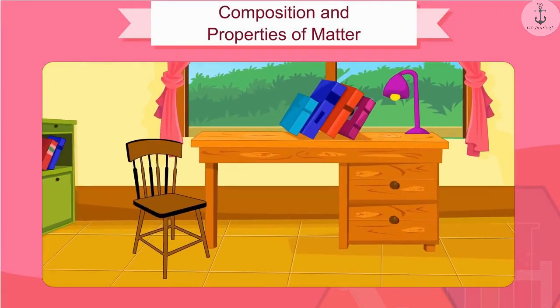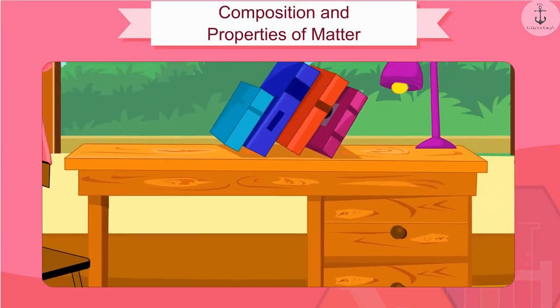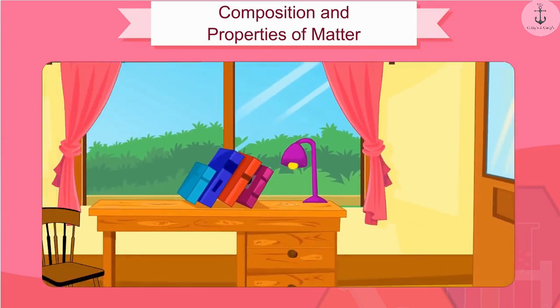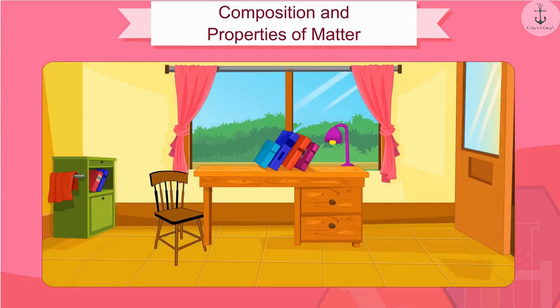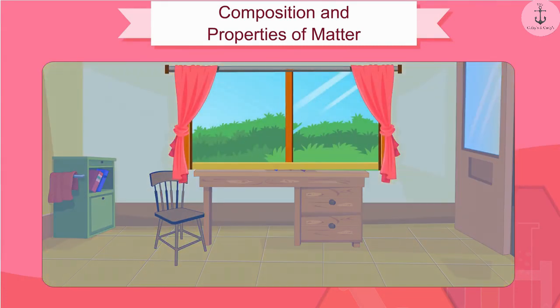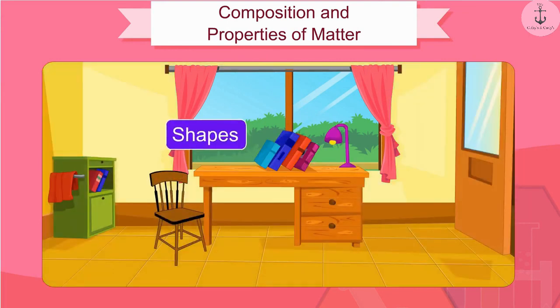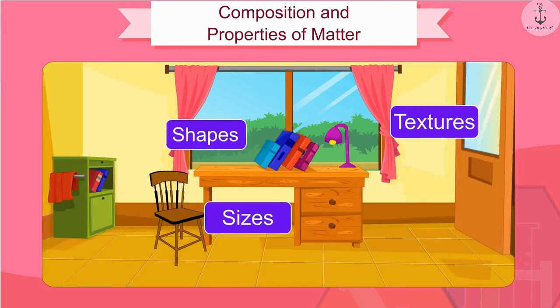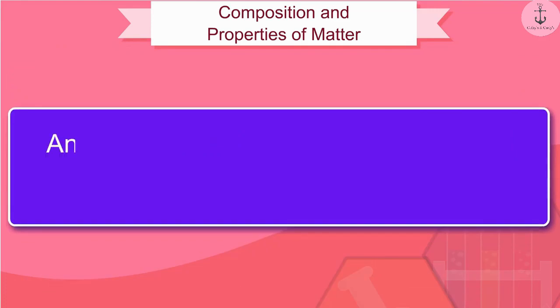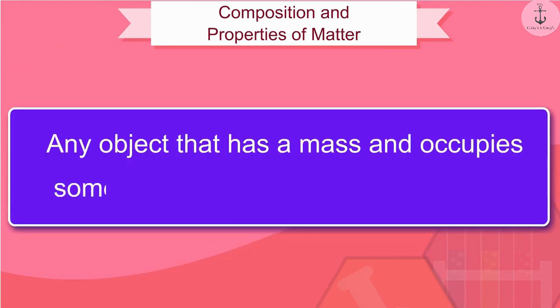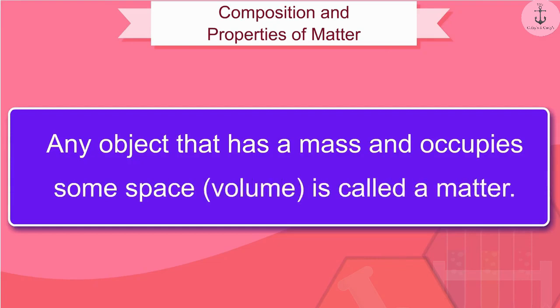As we look at our surroundings, what do you see? Yes, we see a large variety of things around us which have different shapes, sizes, and textures. Any object that has a mass and occupies some space, volume, is called a matter.